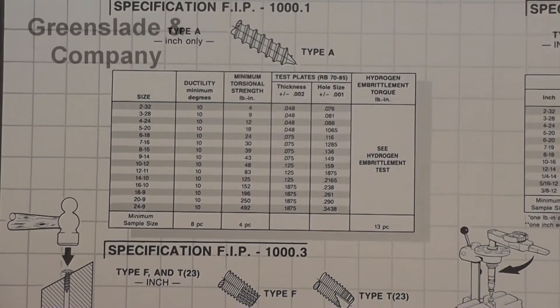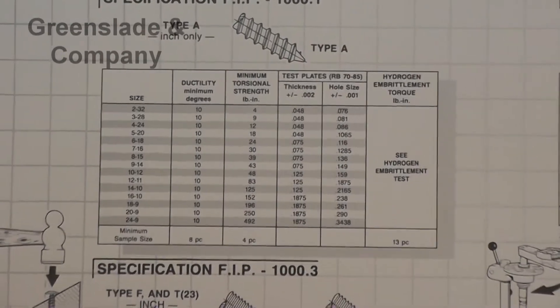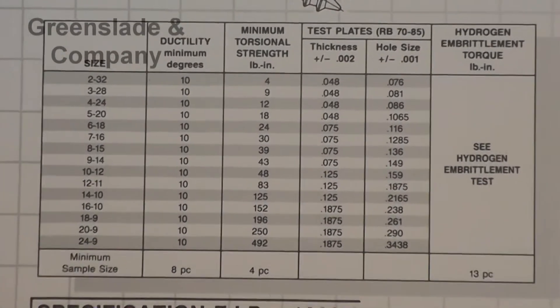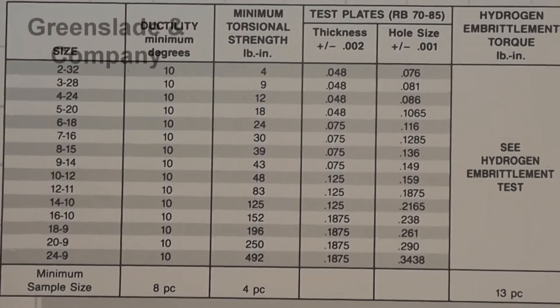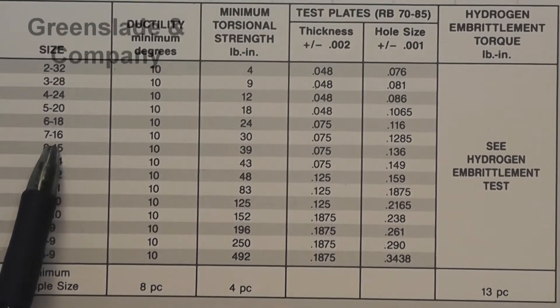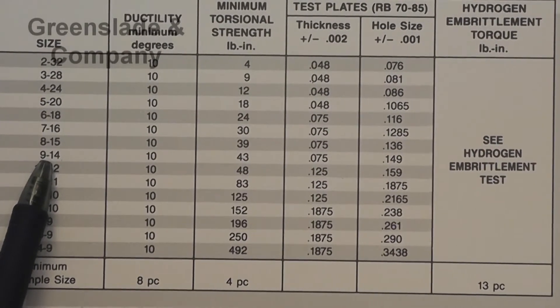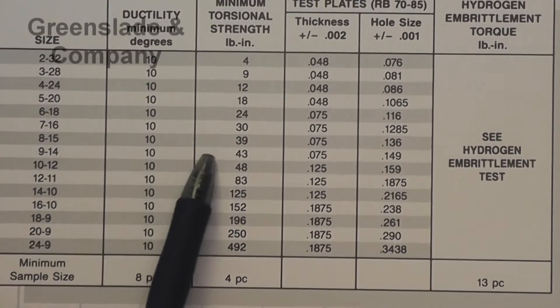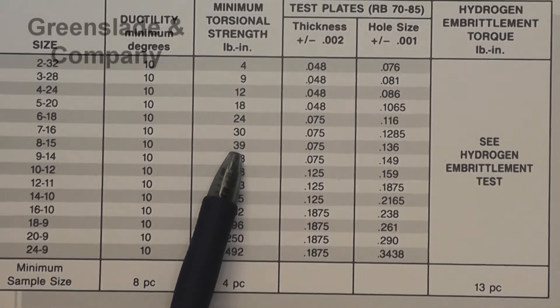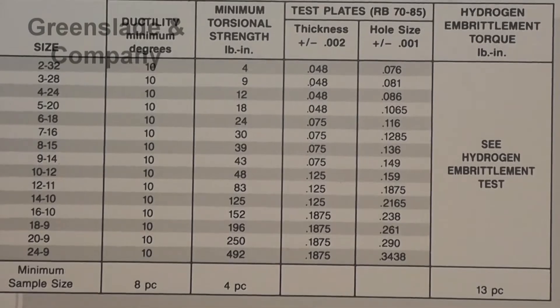We're going to refer to our chart to find out what size collet we need and what size torque wrench we need. If we refer to our chart, go down to the 8-15, move over until we see the 39, and that's our torsional strength for today.